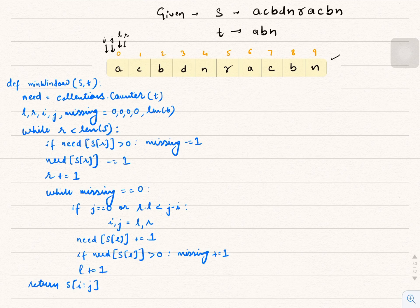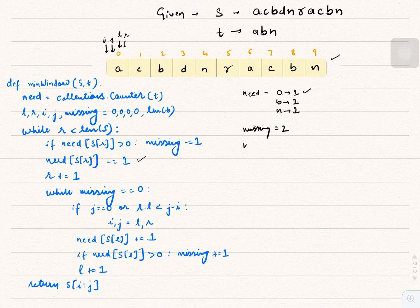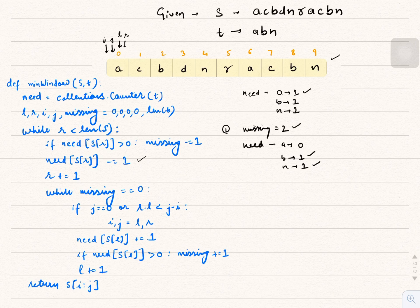In the dry run, R starts at index 0. Initially `need` has A→1, B→1, N→1. The while loop checks if `need[s[r]]` is greater than 0. R points to A, and `need[A]` is 1, which is greater than 0, so `missing` reduces by 1 to become 2. The count for A in `need` is decremented to 0. R then increments to index 1 pointing to C.